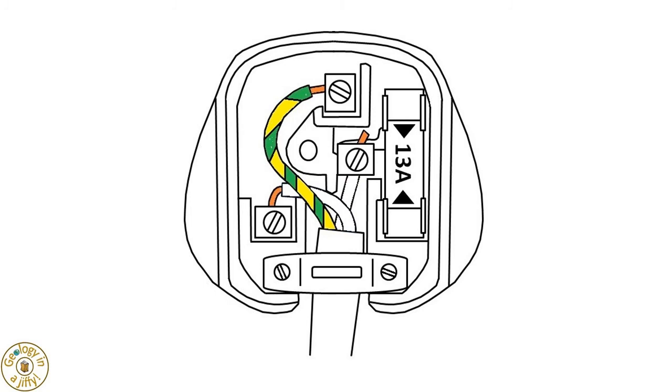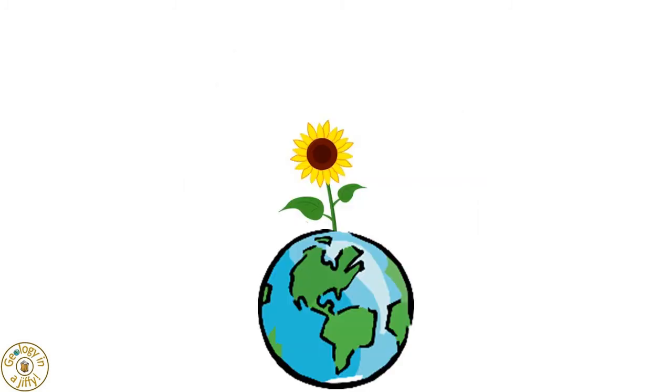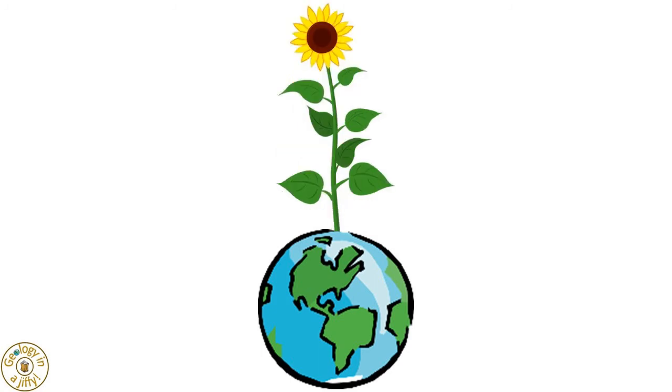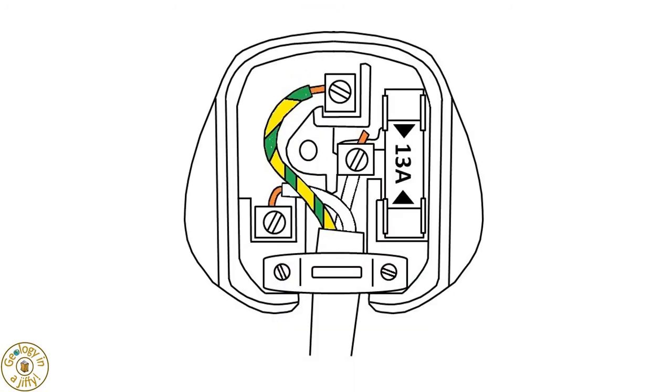The third wire is the yellow and green wire. Think of a yellow and green coloured sunflower growing upwards from the earth. This wire does the same, going upwards out of the cable. This wire is the earth wire.